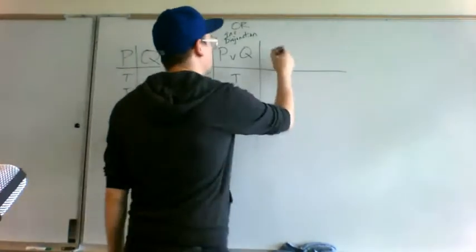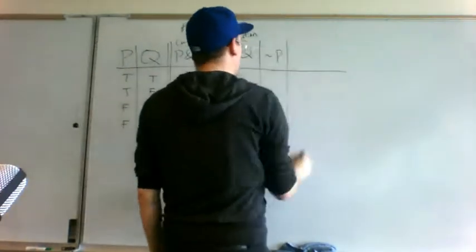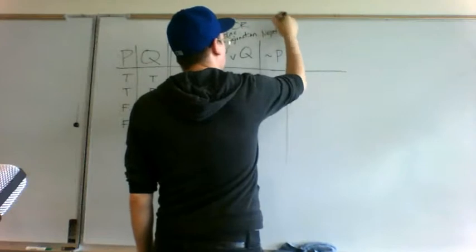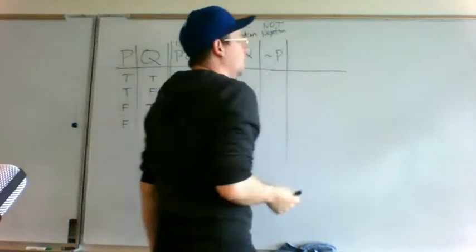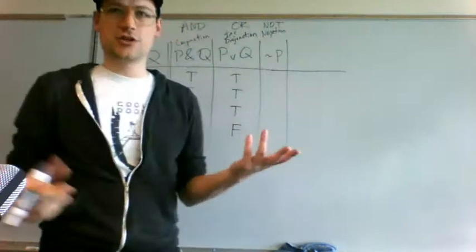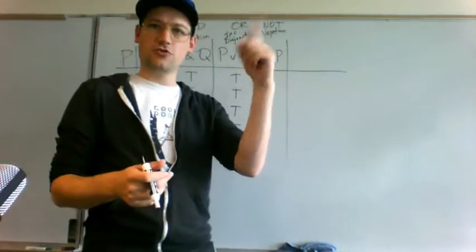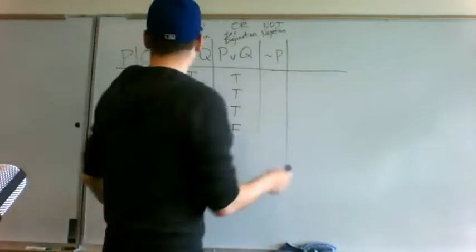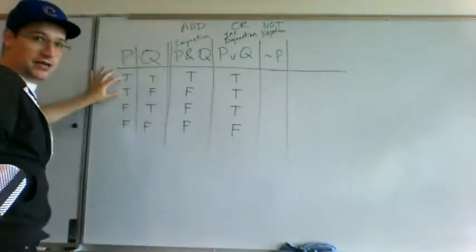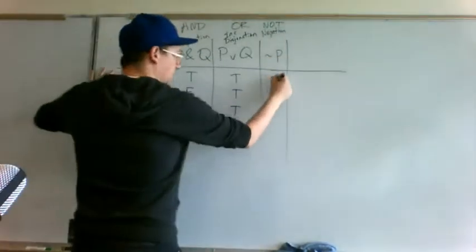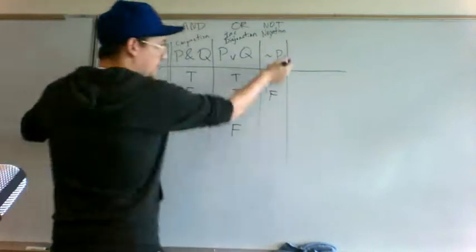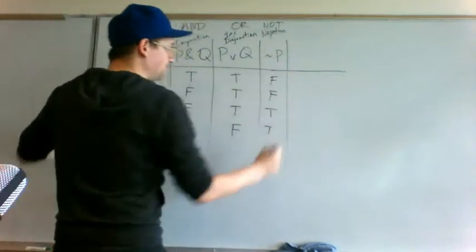OR is very different — this is the inclusive disjunction. OR statements are only false when both component parts are false; otherwise the statement is true. Because all it's saying is at least one of these things is true. And then we also had negation. The truth table for negation is just like a light switch — every negation flips a value from true to false or from false to true. If P is true, then NOT P is false. But if P is false, then NOT P is a true statement.